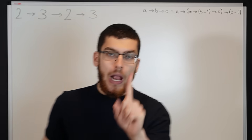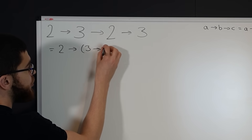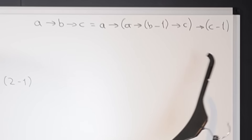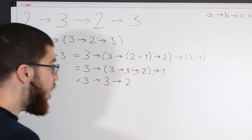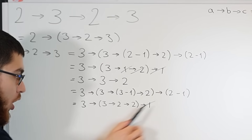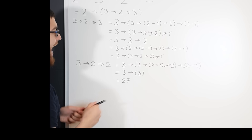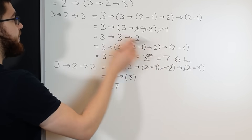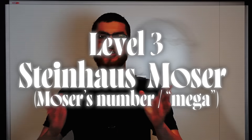With 4-chain numbers we start to see crazy growth. For example 2→3→2→3: evaluating the inner 3→2→3 using the rule gives 3→(3→1→2)→1, which simplifies to 3→3→2, then further to 3→(3→2→2)→1, and 3→2→2 evaluates to 3²⁷ = 7.6 trillion. Substituting back, we end up with 2 to the power of 7.6 trillion, which is just unbelievably massive.